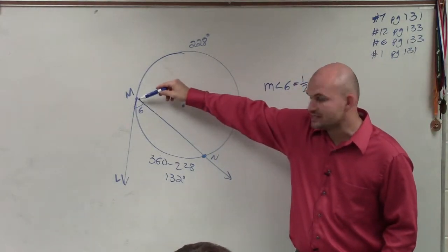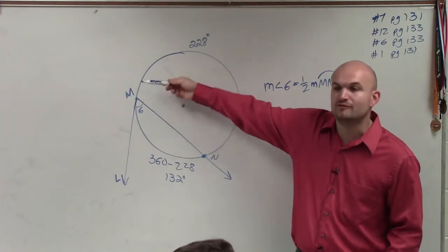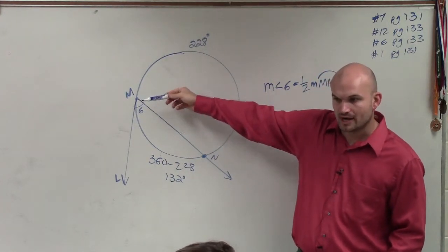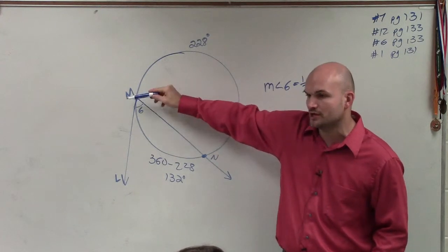So even though it's a tangent and a secant line, it's an inscribed angle. Because remember, inscribed angles were when you had the vertex on the circle, right? So when you have the vertex on the circle, it's always 1 half of what the arc is.